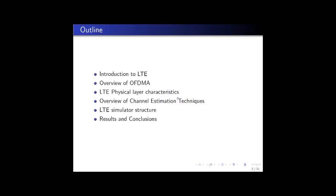The basic outline of the presentation is: in the first few slides I will be giving an introduction to long-term evolution or LTE, which is a fourth generation wireless technology, following which there will be an overview of orthogonal frequency division multiple access technology. Later on we will have a look at the various LTE physical layer characteristics or specifications laid out by the third generation partnership project, called 3GPP, which is the standardization body for LTE, and then an overview of the various channel estimation techniques.